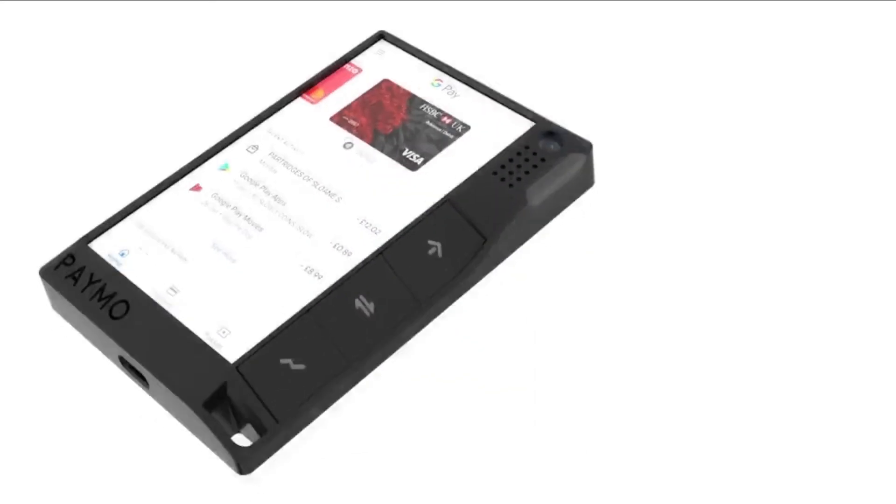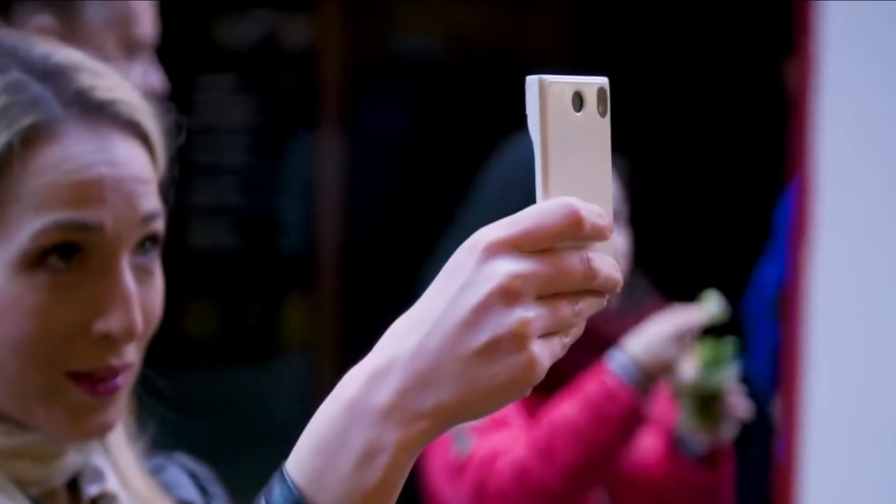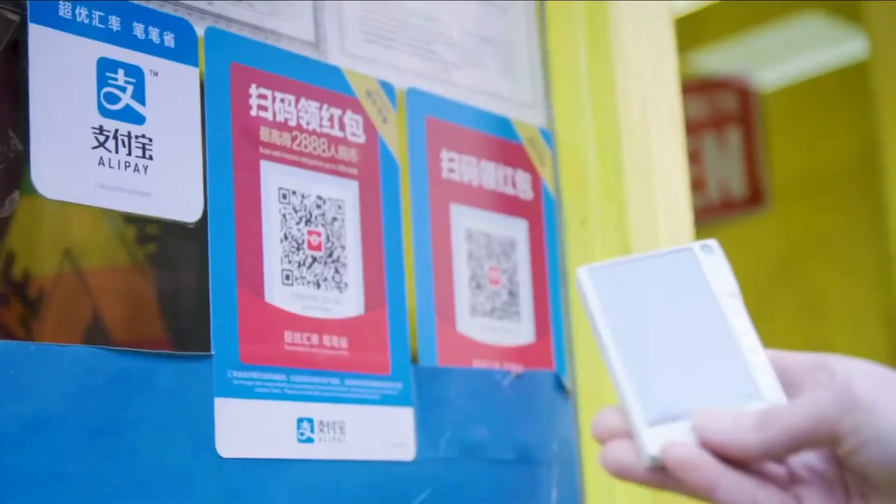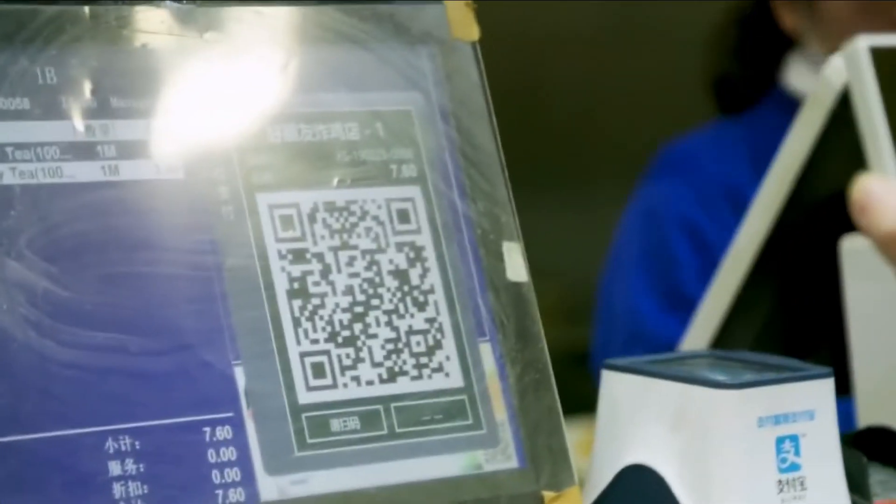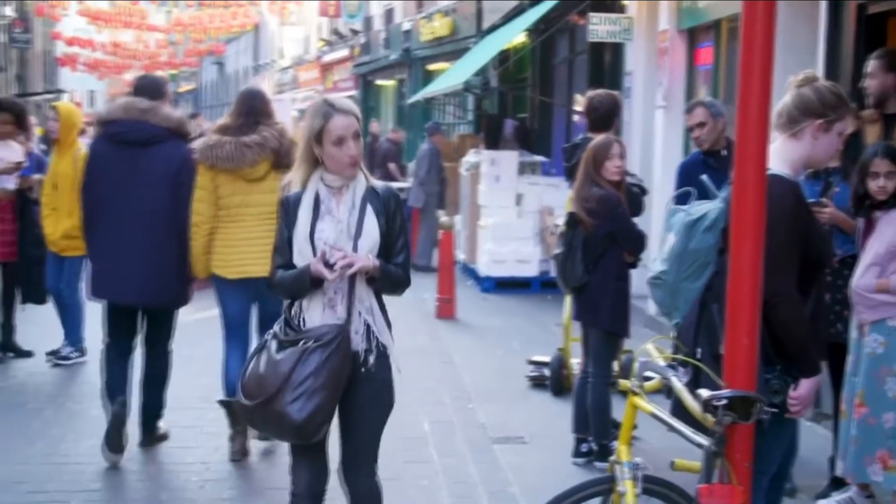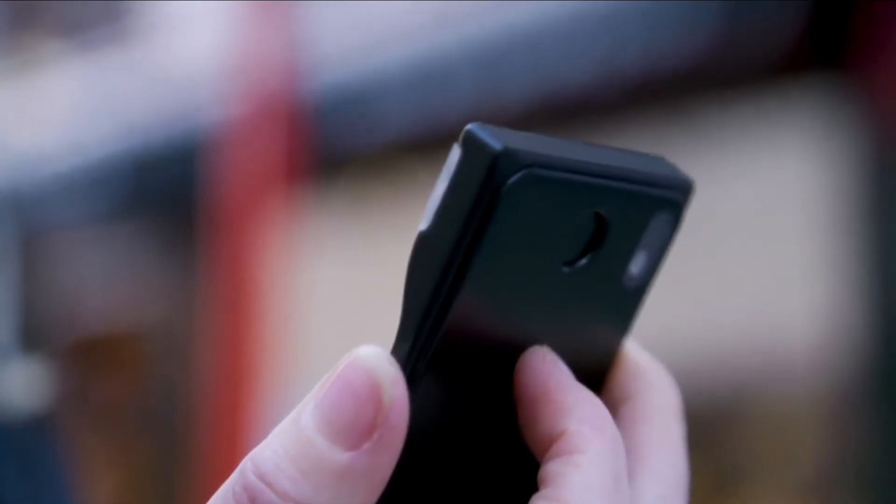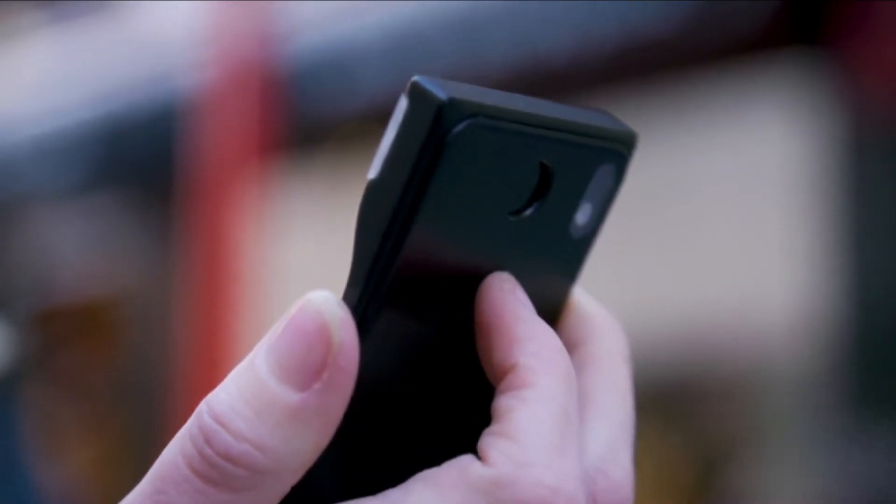Paymo features dual cameras, a front camera for any services requiring facial recognition, taking a selfie or video. The back camera is used for scanning QR codes and barcodes for services such as WeChat Pay. Security is obviously paramount. The fingerprint on the back of the Paymo allows only authorised use of the device.